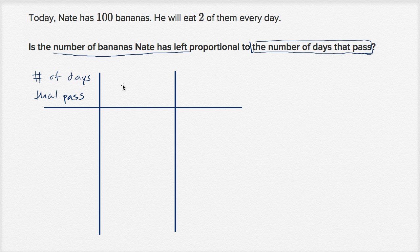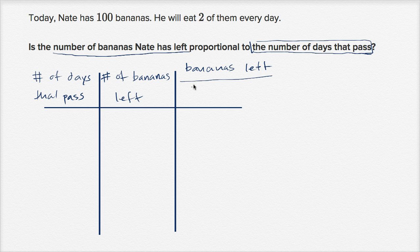And this middle column, I'm gonna write the number of bananas Nate has left. And over here, I'm gonna make the ratio between the two. In order for this to be a proportional relationship, the ratio between these two has to be constant. So bananas left divided by days past.